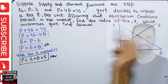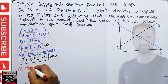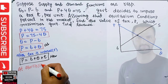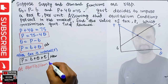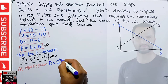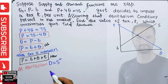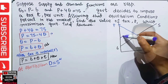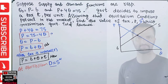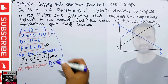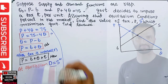At equilibrium, since we have been told that equilibrium conditions prevail, we need to equate our demand and supply functions. We set demand equal to the new supply function. The new supply function has shifted upward and we need to solve for the new equilibrium by equating these two functions.